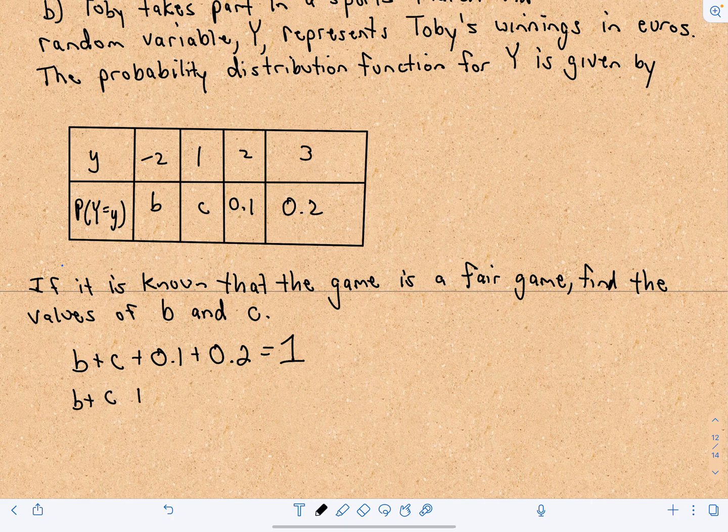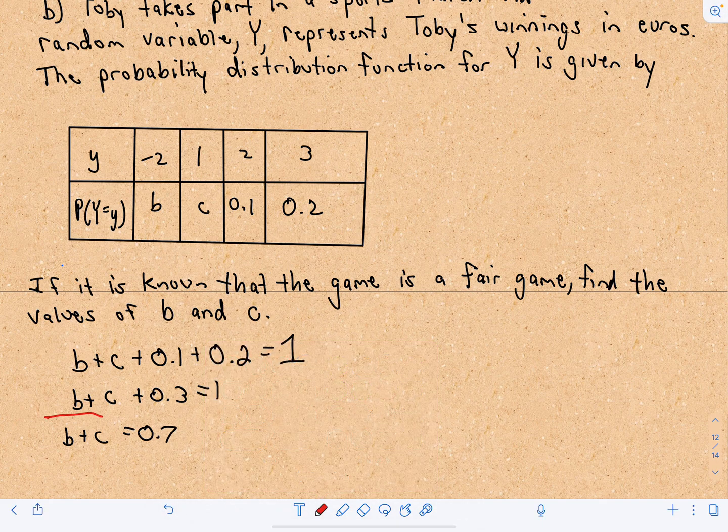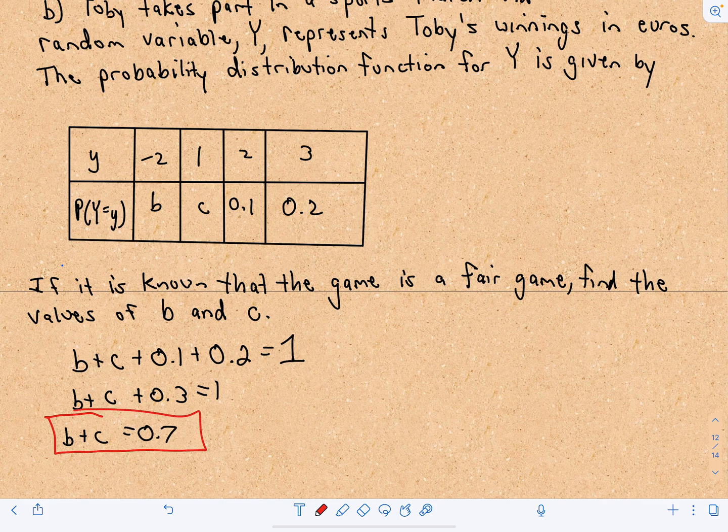That gives us B plus C plus 0.3 equals 1. We can subtract 0.3 from both sides and get the B plus C equals 0.7. So that's going to be something useful to us.